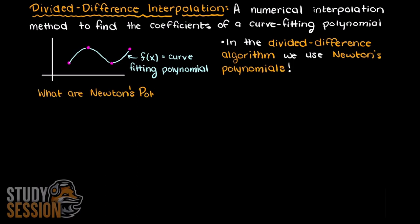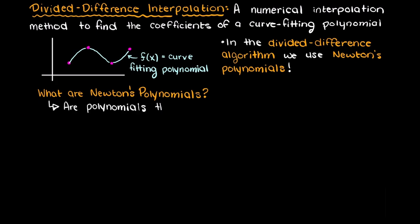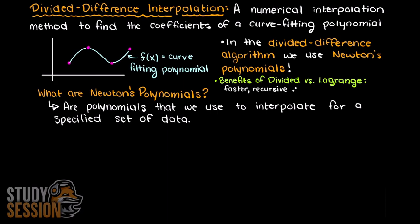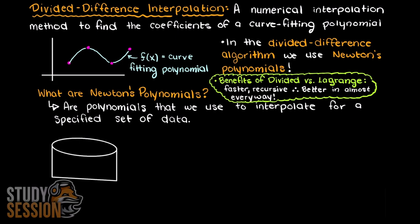In the divided difference method, we use Newton polynomials as our interpolating functions. Newton polynomials are just polynomials used to interpolate discrete data points from a given data set. You may ask — we have learned about Lagrange polynomials, why can't we just use those? Well, Newton polynomials through divided difference have many advantages: it is faster, recursive, and through such, better and much more widely used than Lagrange polynomials.